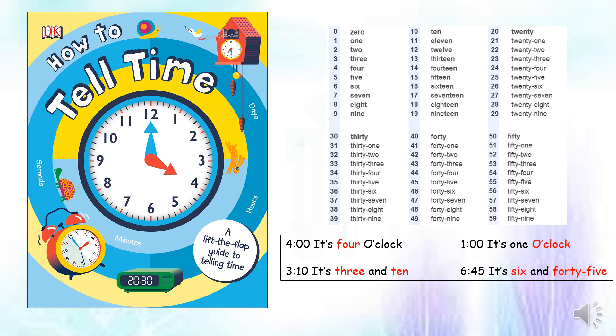Today we are going to learn the easy, simple way to tell the time. Vamos a utilizar la forma sencilla, la más práctica de decir la hora. Chicos, estamos trabajando en esto porque la idea es que ustedes sean capaces de decir su rutina en inglés. For example, I wake up at 6:45. Cuando las horas son en punto, I use the expression o'clock. En punto significa o'clock. Entonces, si me dicen las cuatro en punto, yo digo it's four o'clock. Si son las cinco en punto, it's five o'clock. Si es la una en punto, it's one o'clock.